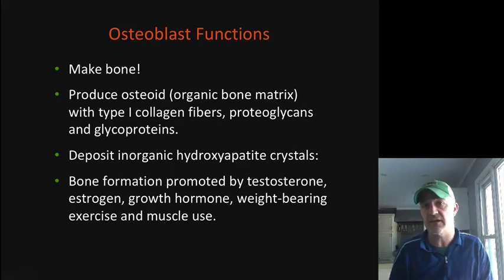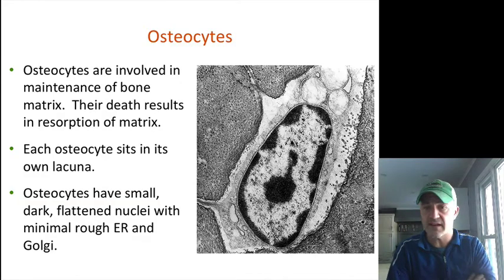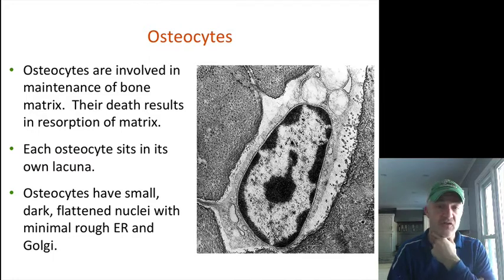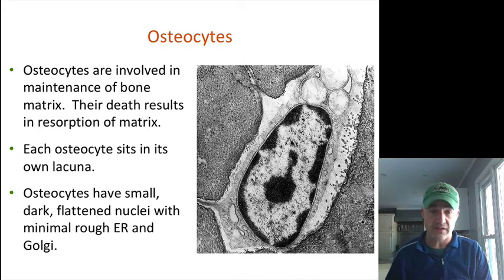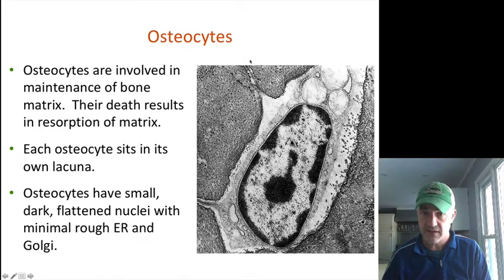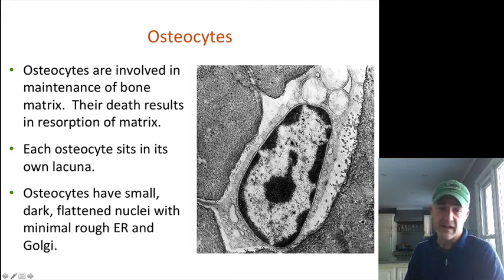Osteocytes are the cells trapped within the hydroxyapatite matrix. They sit in their own little spaces called lacunae, and they have tiny canals or extensions called canaliculi going off from them. These osteocytes are really there to maintain the bone that they're trapped within.